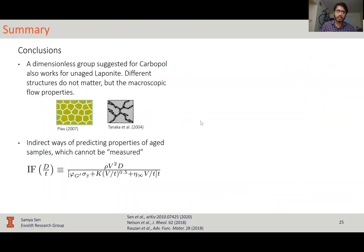So, to summarize, we showed that a dimensionless group suggested for carbopol also works for unaged laponite. The different microstructures really do not matter as far as the macroscopic flow properties mattering. But we did see that the value of C is over a factor of two larger for carbopol compared to laponite. But those are the exact specific details. The general physics is still captured very well with the macroscopic flow properties.